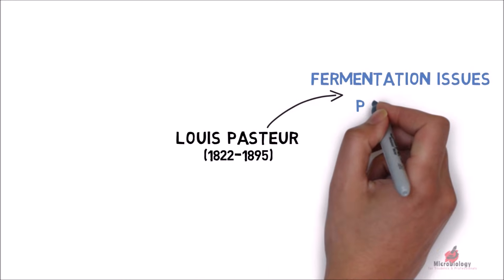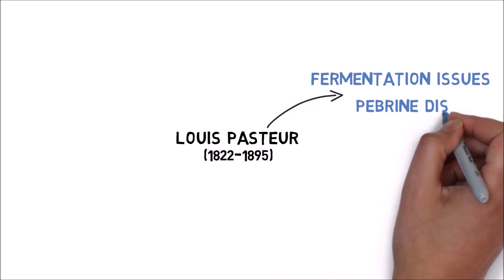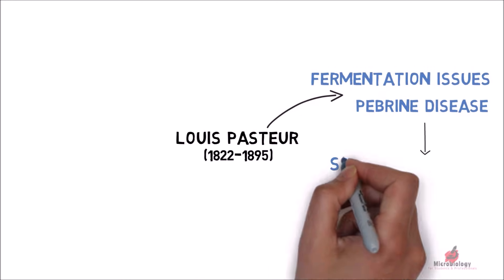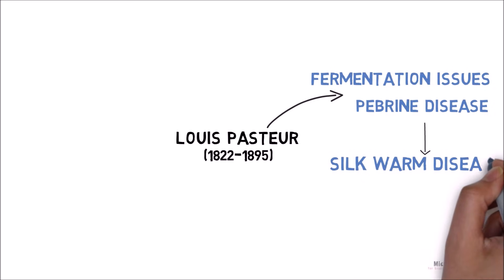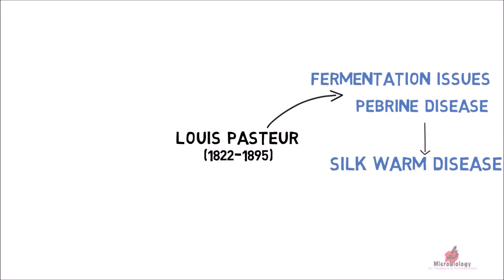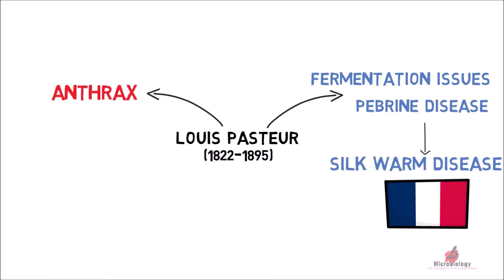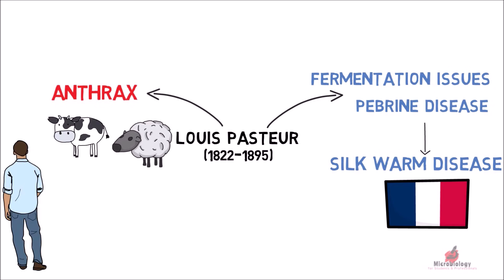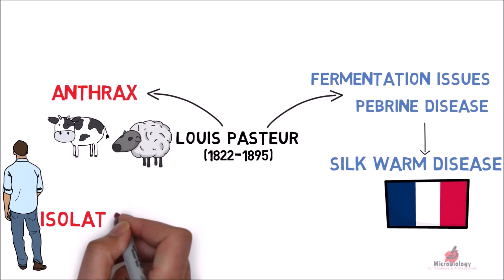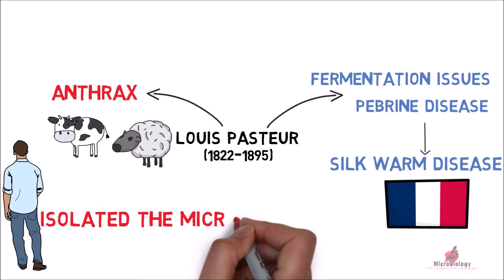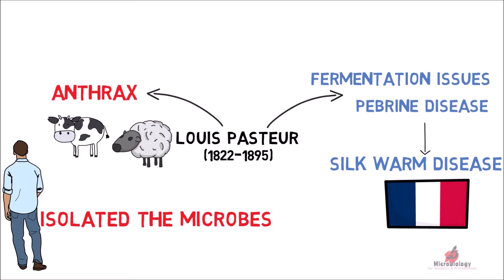Pasteur was then challenged by the French government to work on anthrax. Anthrax is a disease of cattle, sheep, and rarely human beings. He isolated the microbes from the blood of infected animals.